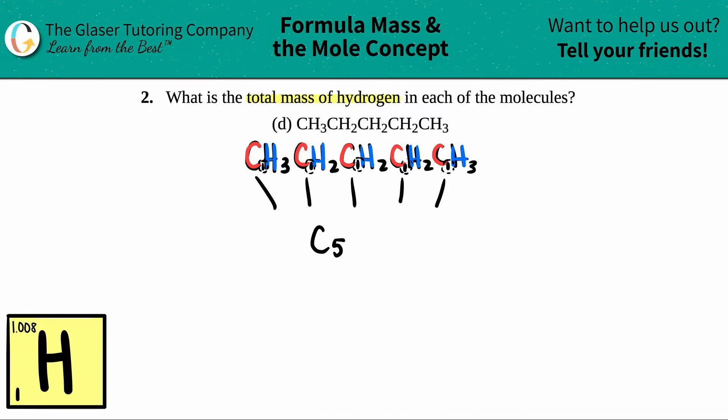Now let's do the hydrogens. I see that I have three here, I have two here, I have two here, two here, and three here. So I'm going to add them all together: 3 + 2 + 2 + 2 + 3. Three plus two is five, six, seven, eight, nine, ten, eleven, twelve. So I will just say H12. Now I made it easier for myself. How many total hydrogens do we have? Oh, we have 12 of them.